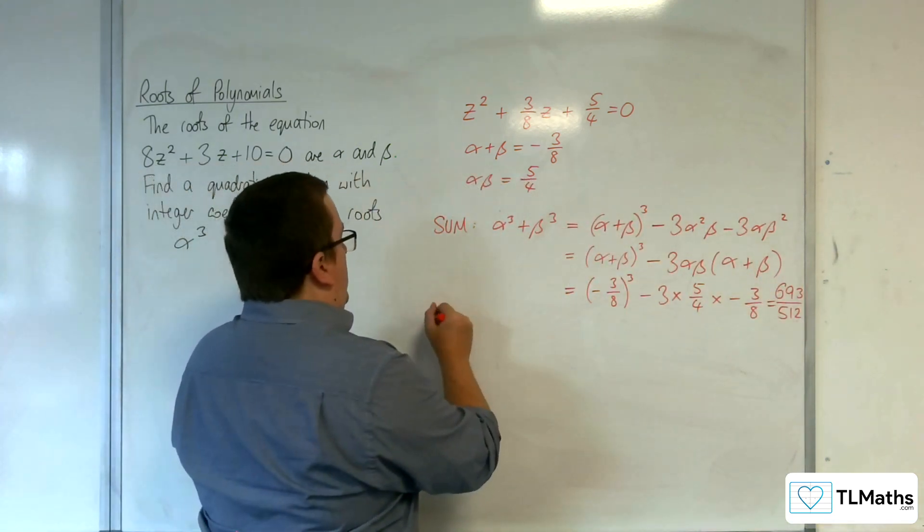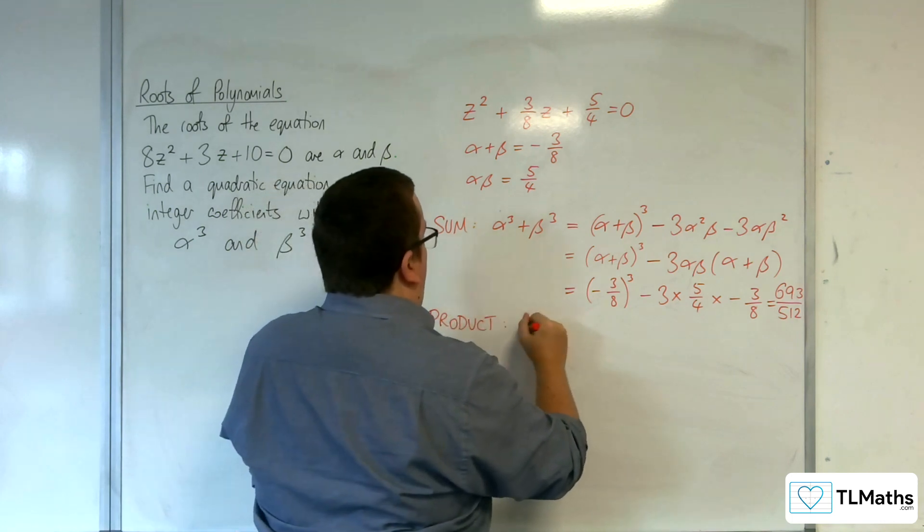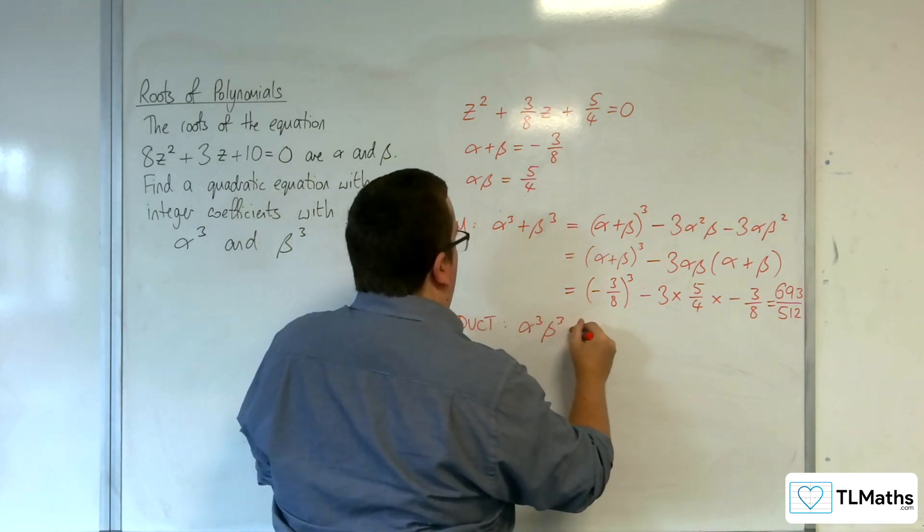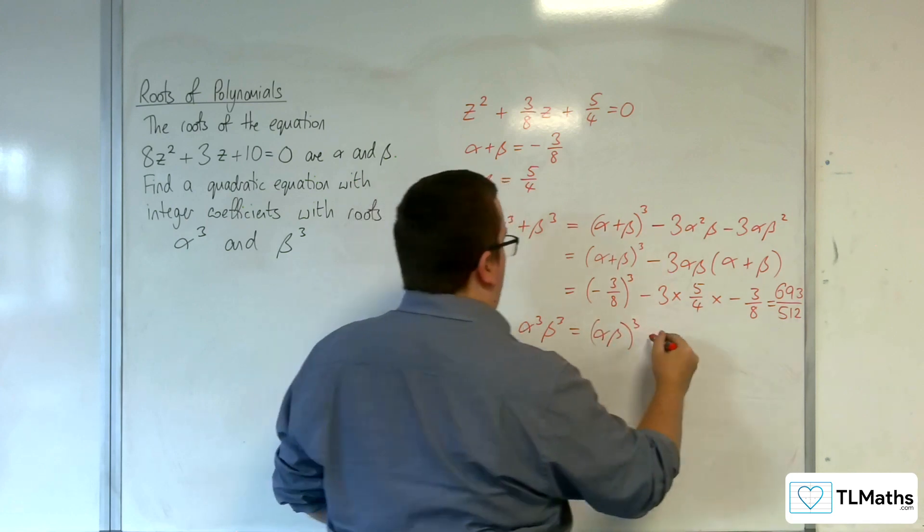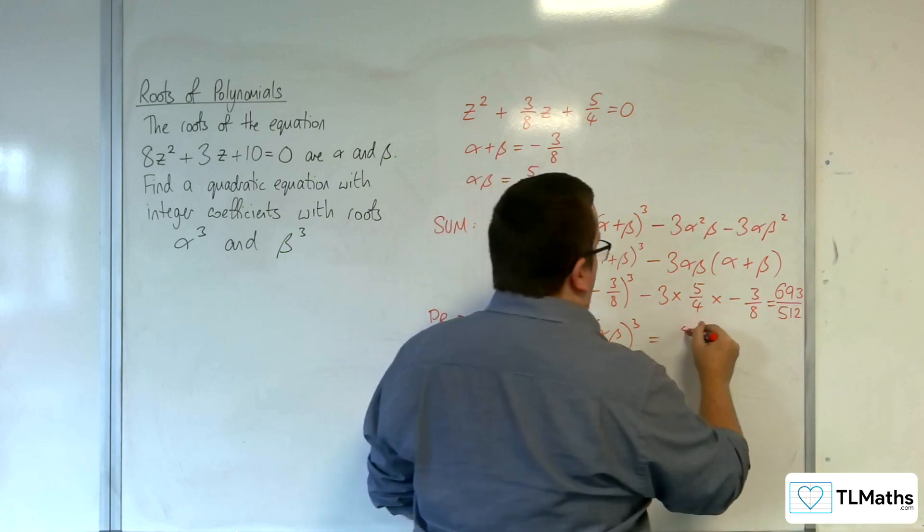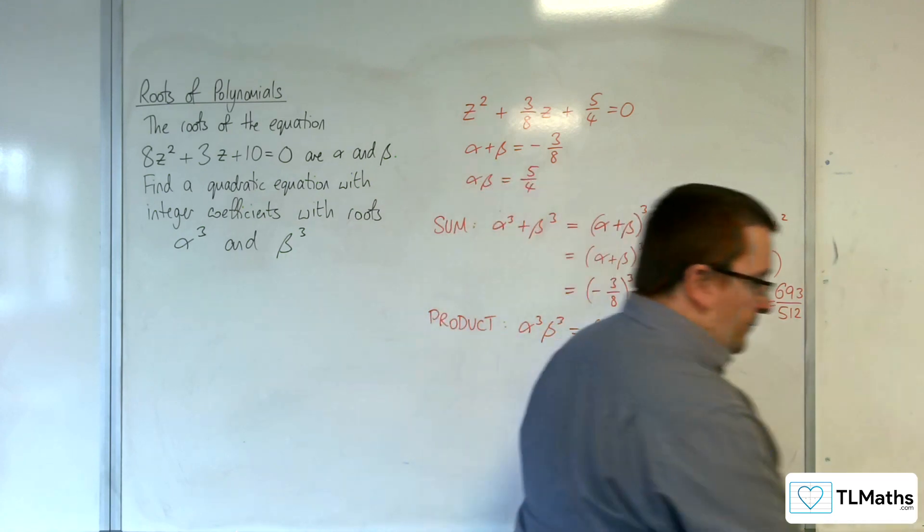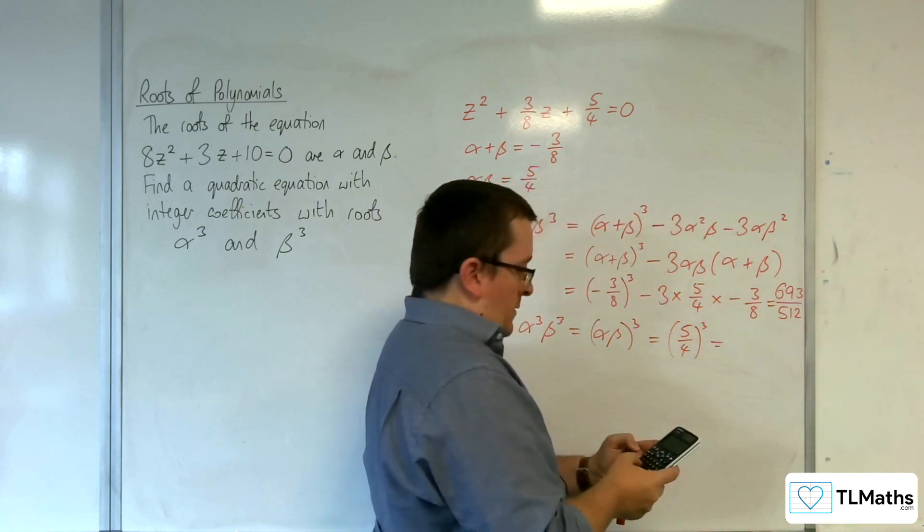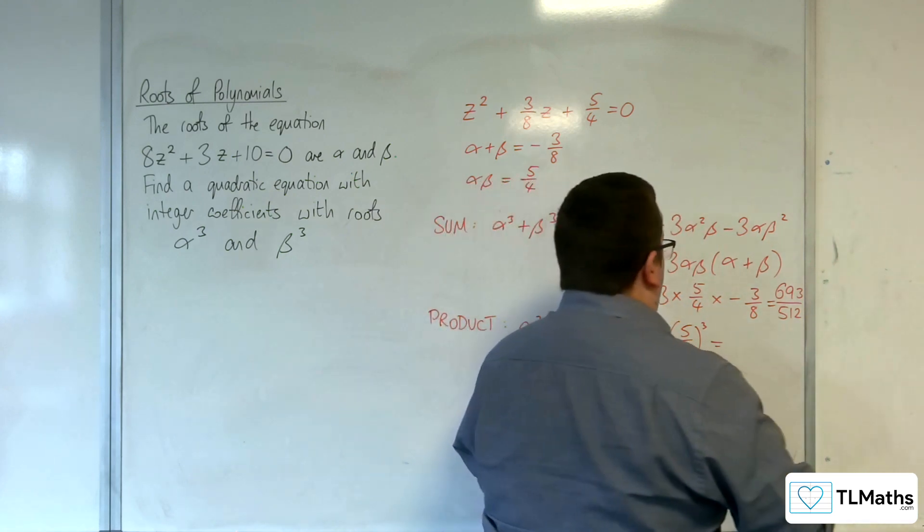Then the product is α³ × β³, which is (αβ)³. So αβ is 5/4, therefore (5/4)³ = 125/64.